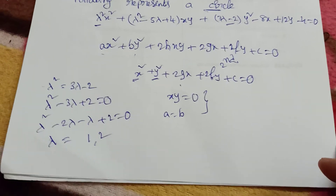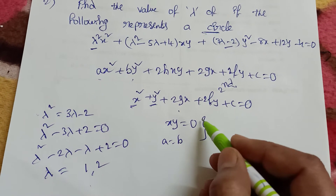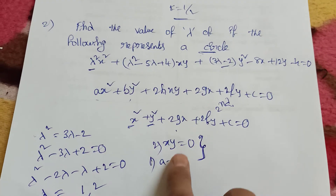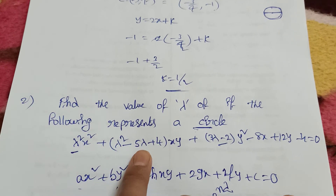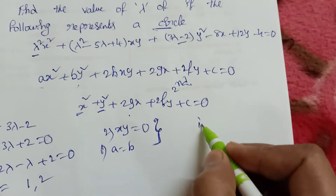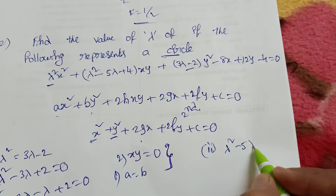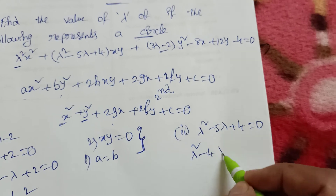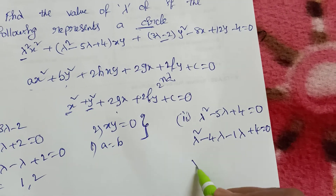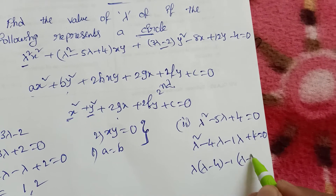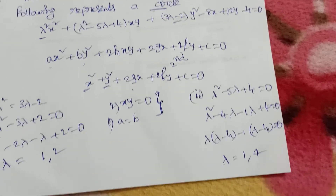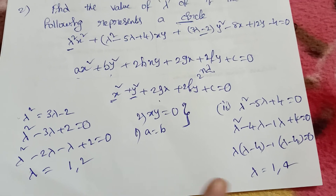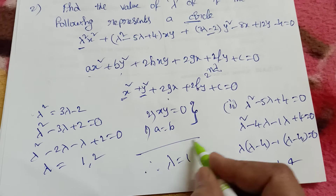Now applying the second condition h = 0: the xy term coefficient must be zero. Setting λ² - 5λ + 4 = 0, we factor to get (λ - 4)(λ - 1) = 0, giving λ = 1 or λ = 4. From condition 1 we got λ = 1 or 2, and from condition 2 we got λ = 1 or 4. The common value is λ = 1.